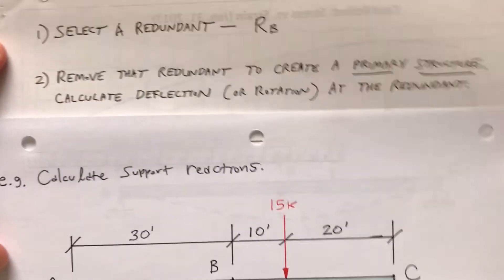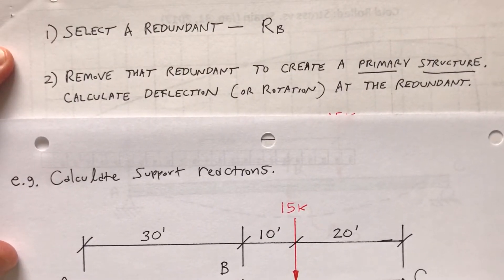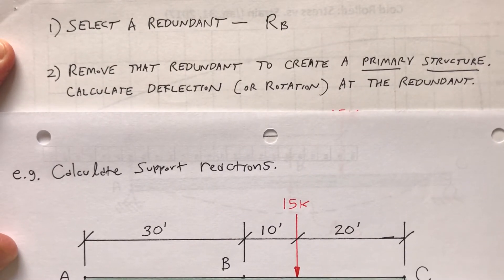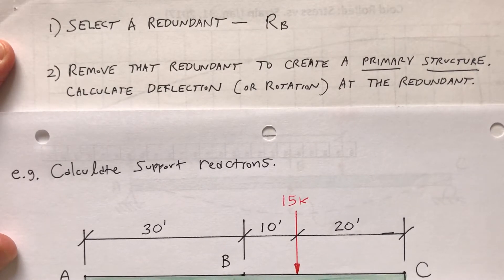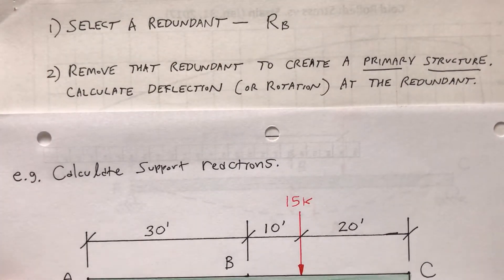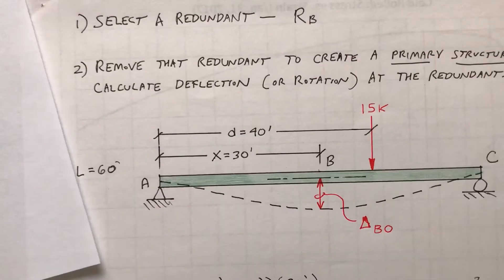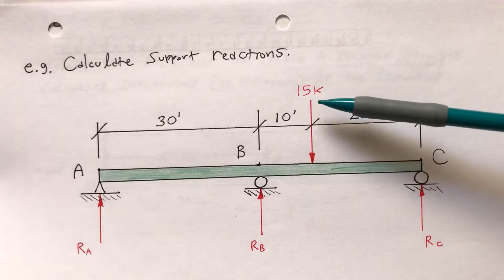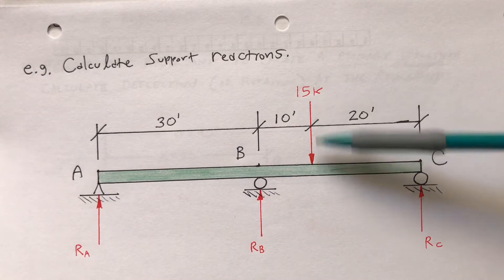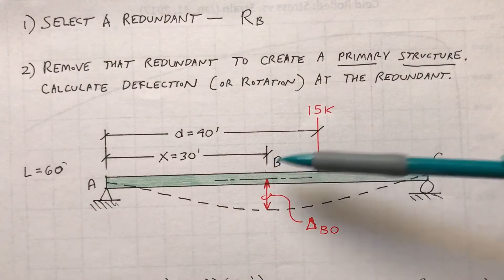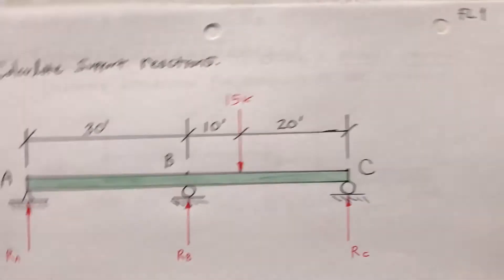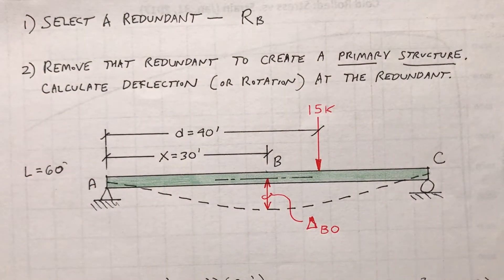Step two: remove that redundant — remove the roller at B to create a primary structure. The 15-kip load is 40 feet to the right of point A, and point B is 30 feet to the right of point A. When I take out that roller, I'm left with a simply supported beam. When I do that, it's going to deflect because that roller isn't there anymore. The deflection I will call delta sub B zero, where the first subscript means it's at point B, and the second subscript denotes it's the primary — sometimes called the released — structure.